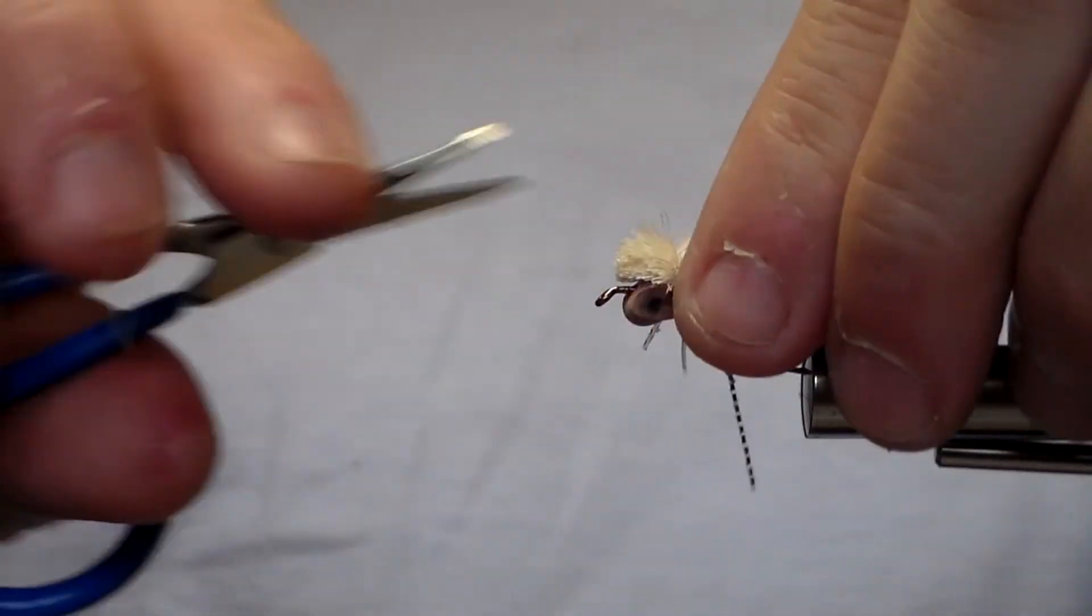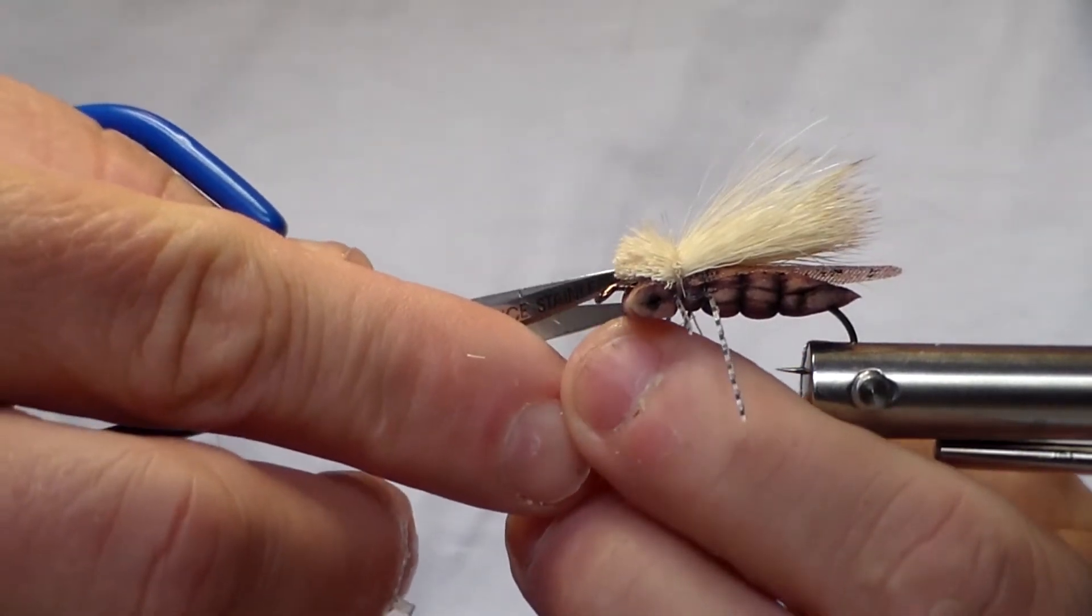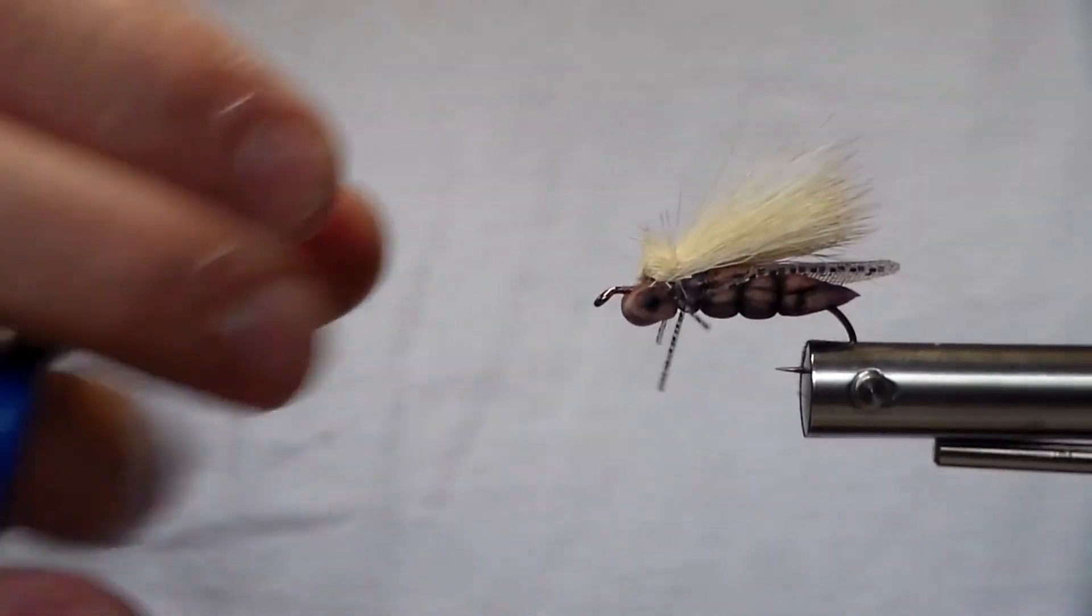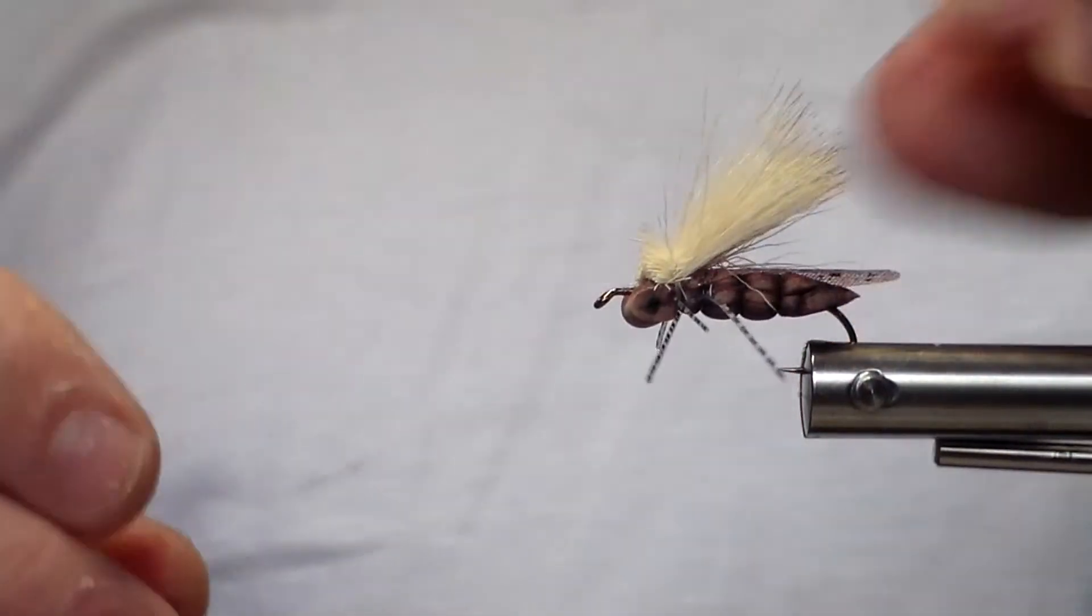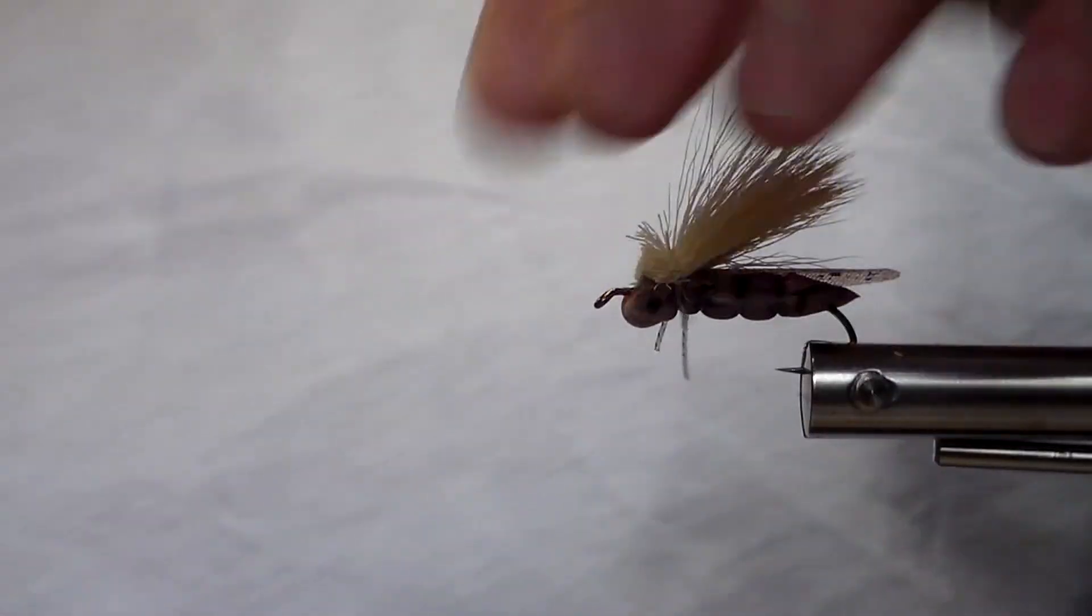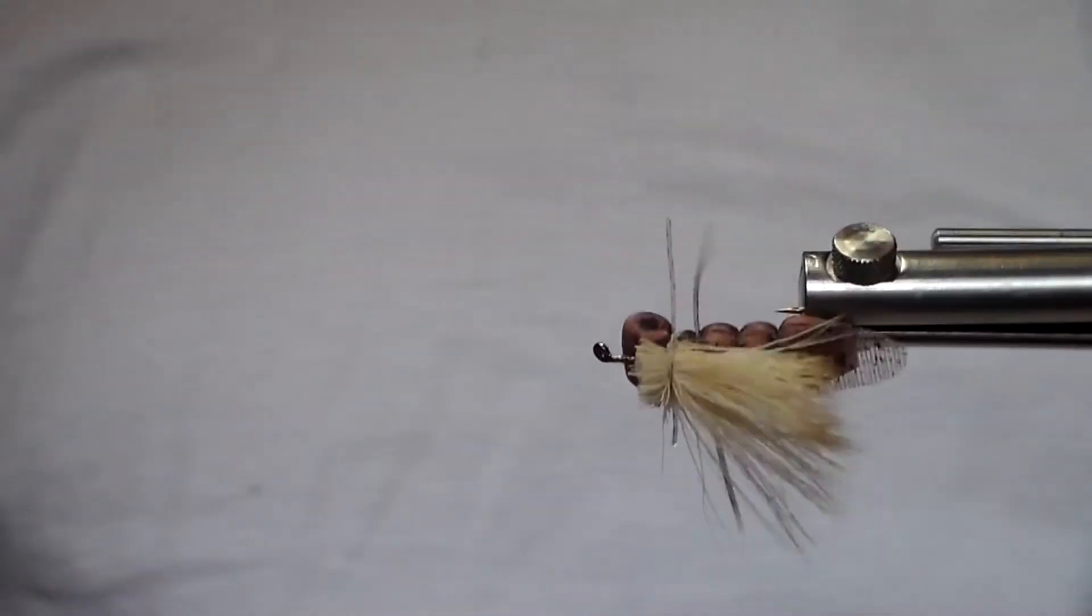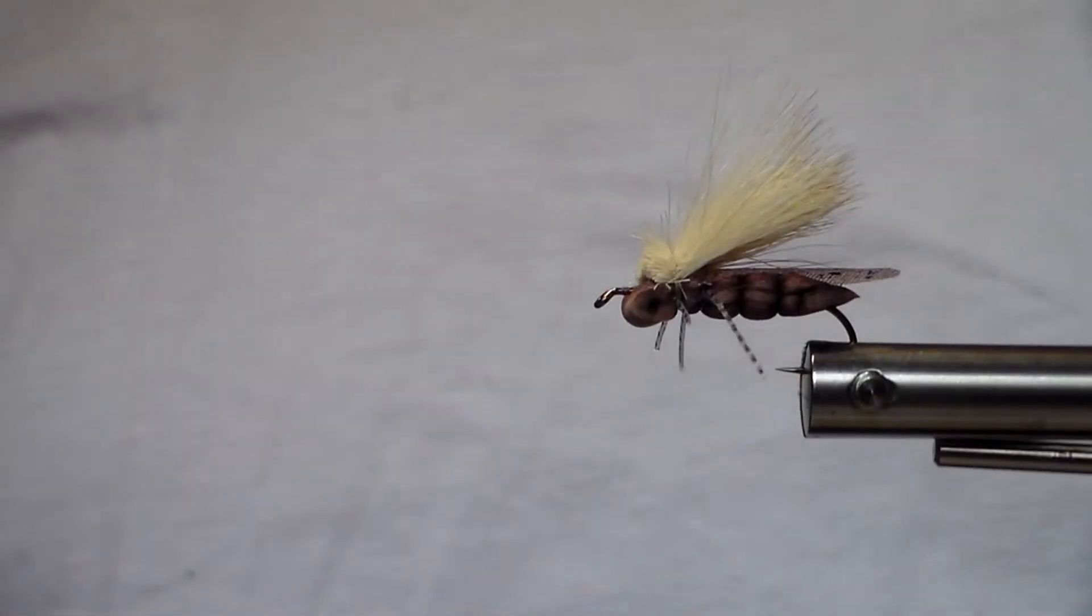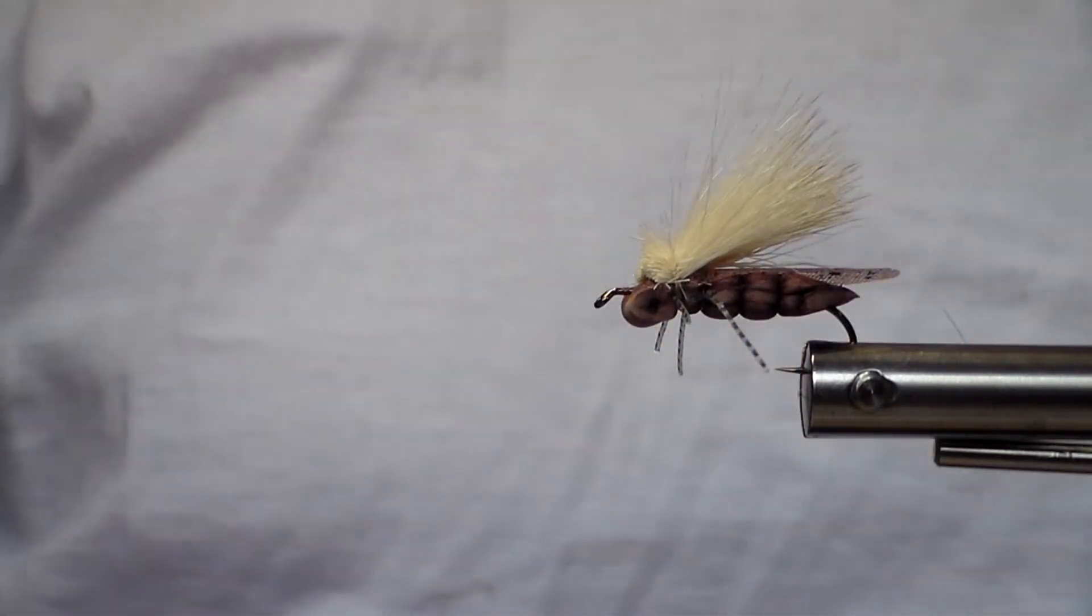And then I clean up any excess stuff that I don't like, and there you have it—nice little Charlie Boy hopper. A little coloration, great hopper pattern, easy to tie, catches a lot of fish, works well as a hopper dropper. So I hope you enjoy, please subscribe.